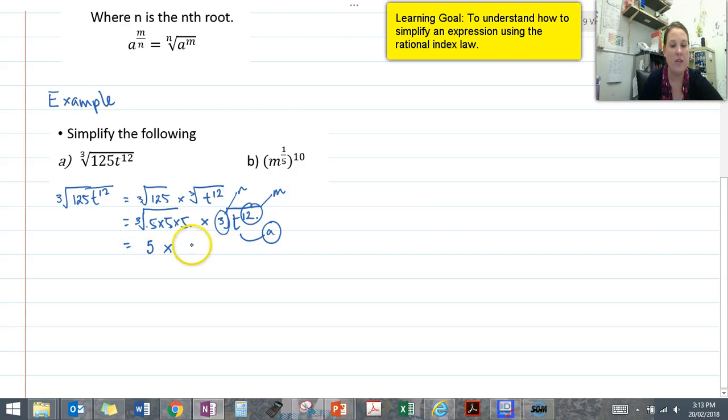So we're going to end up with t to the power of 12 over 3. We can simplify that fraction as 5 times t to the power of 4, because 12 divided by 3 equals 4, which gives us a final simplified answer of 5t to the 4.